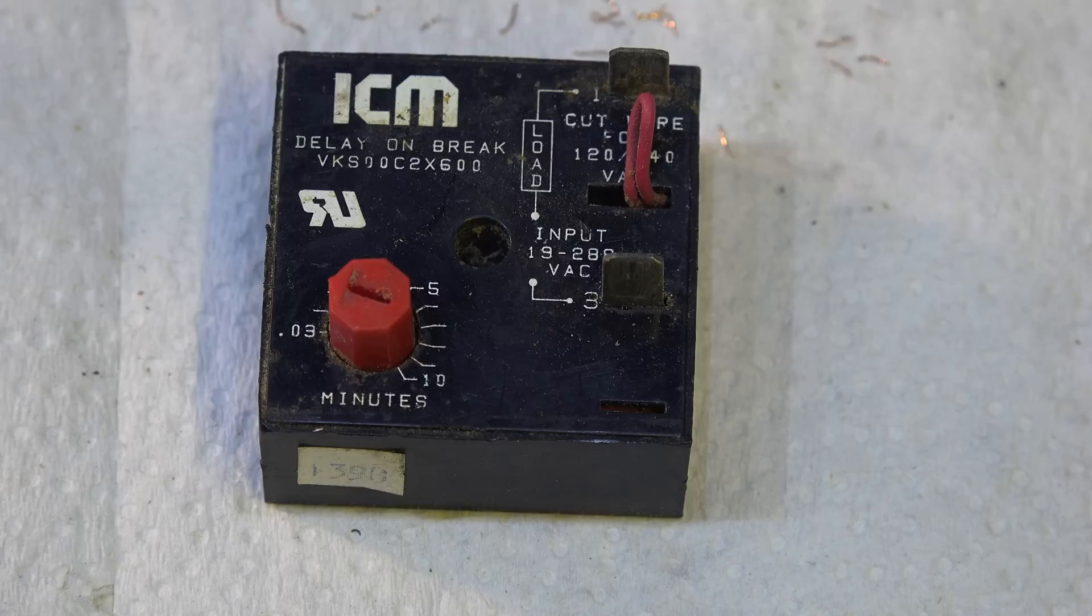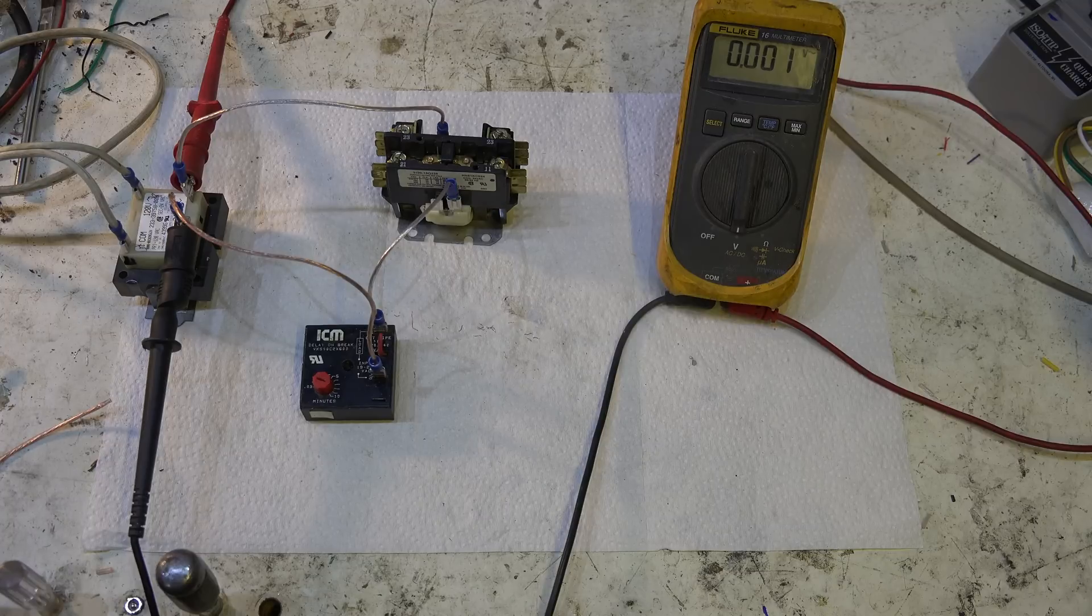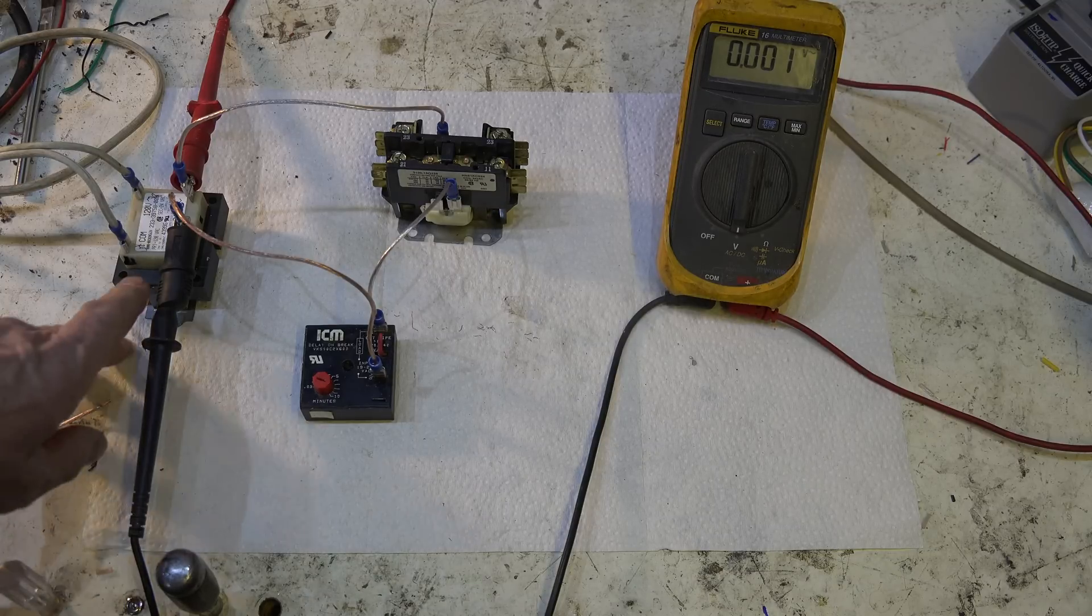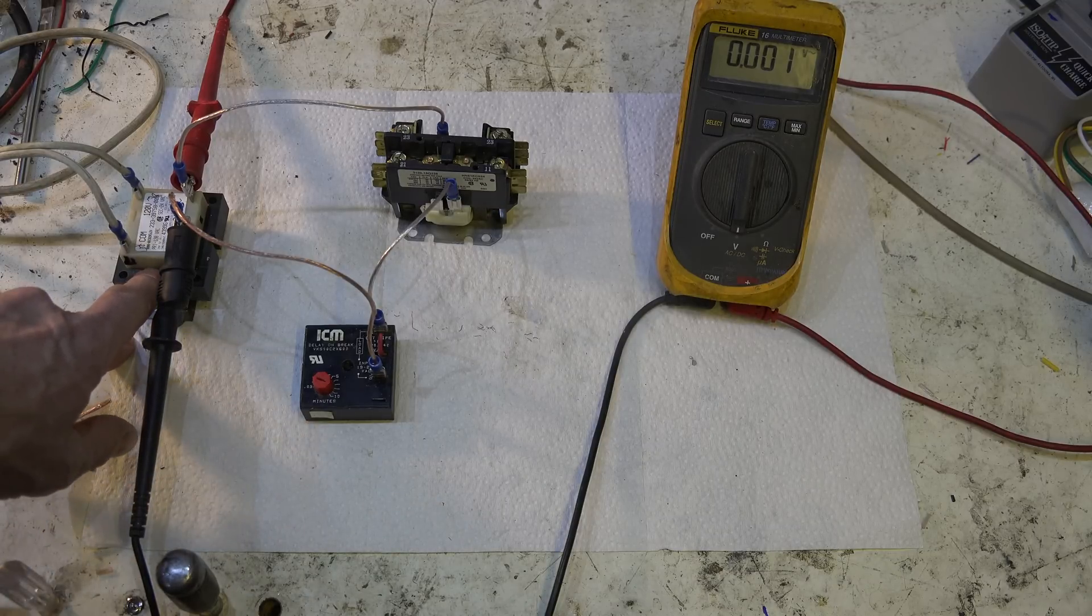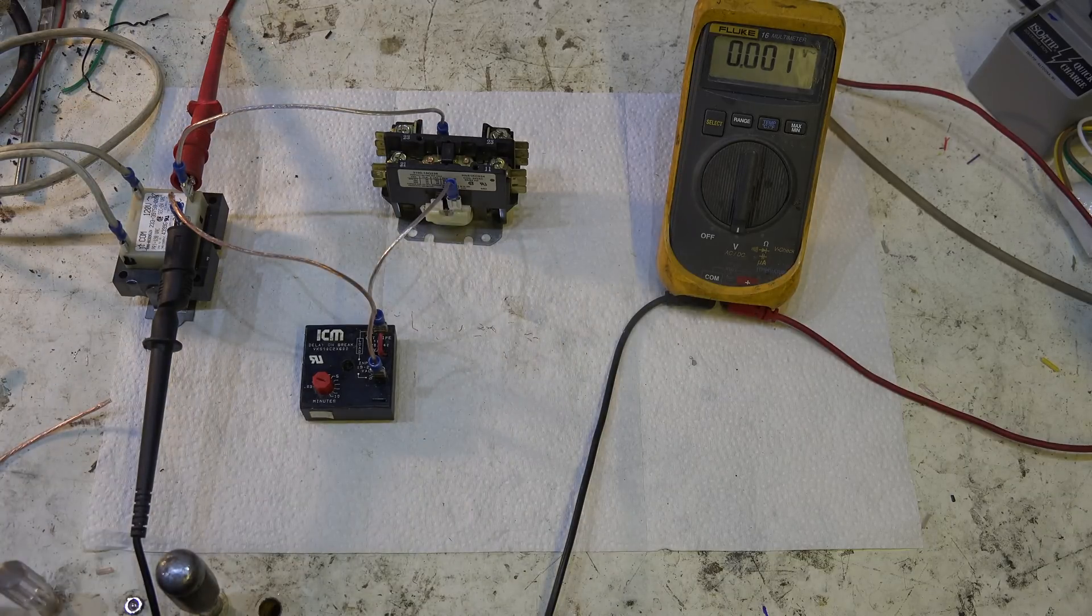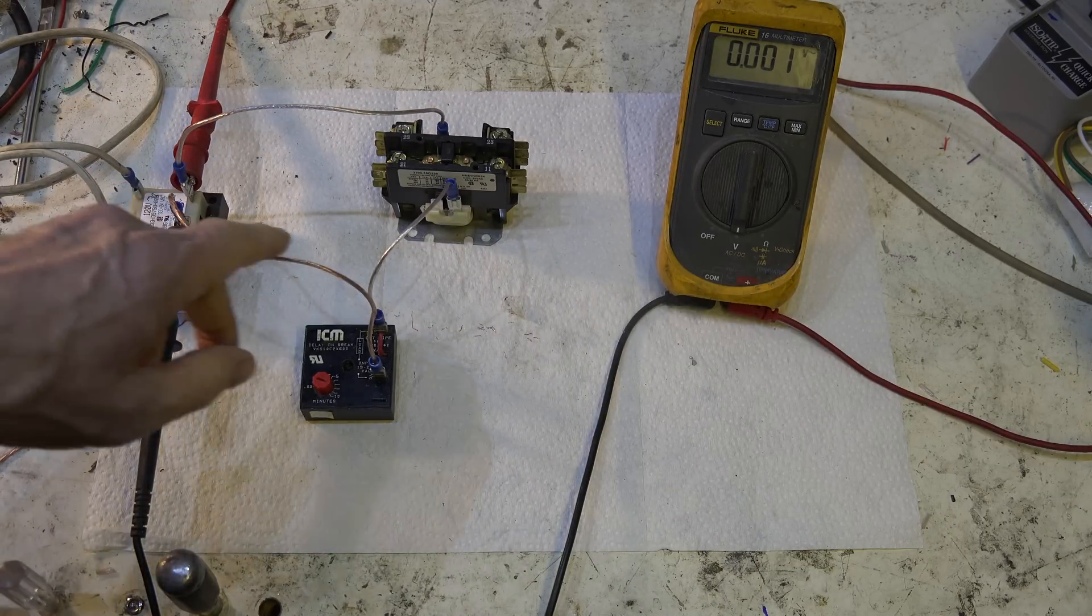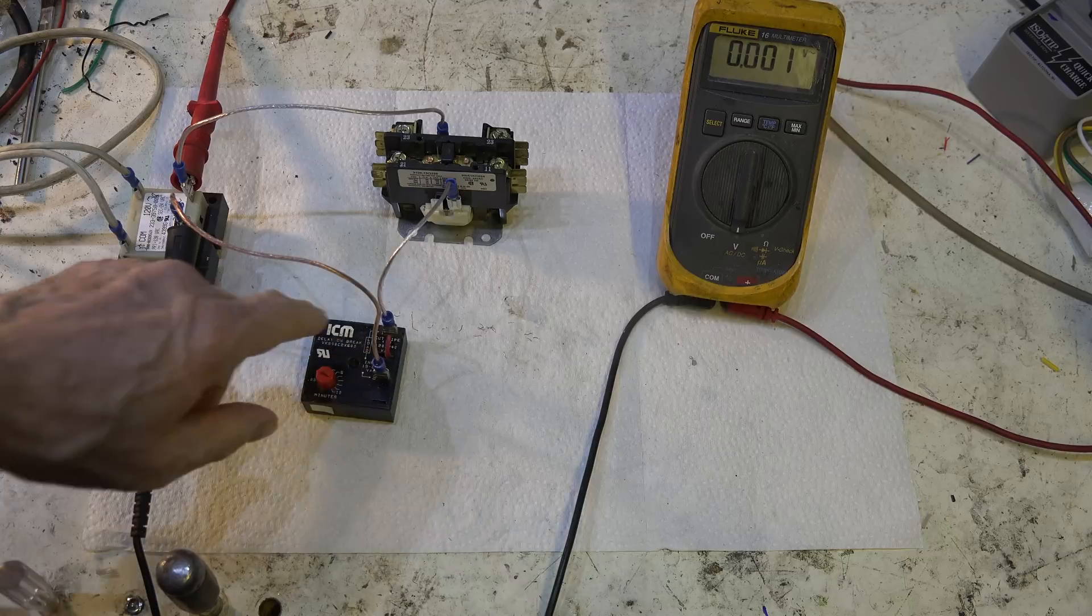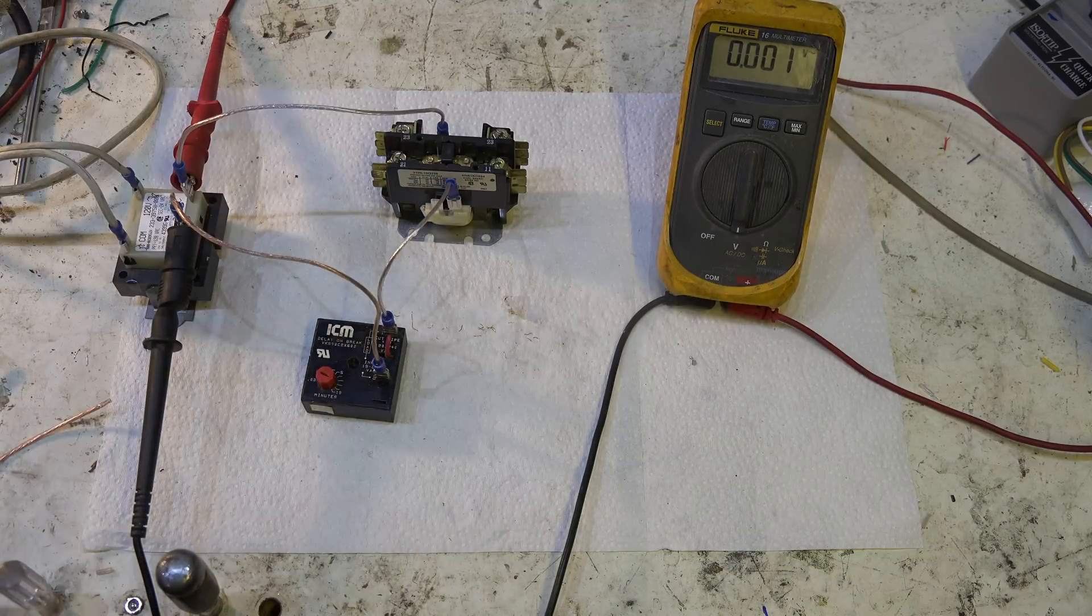Now I'm gonna show you the setup we have here. I've just taken a 24 volt transformer. I've hooked one common side to a contactor. I've taken the other side and run it through this control to the contactor, so this is feeding the coil of the contactor 24 volts.